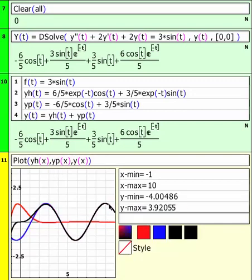So the yh is the solution in red. This decays relatively rapidly compared to the frequency. So this solution, e to the minus t sine t, e to the minus t cosine t, that decays relatively rapidly.